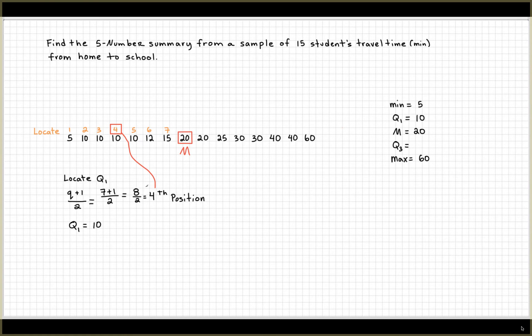All right, now let's look for Q3. In Q3, again, we're going to write the location: one, two, three, four, five, six, and seven. We're not going to include the median.